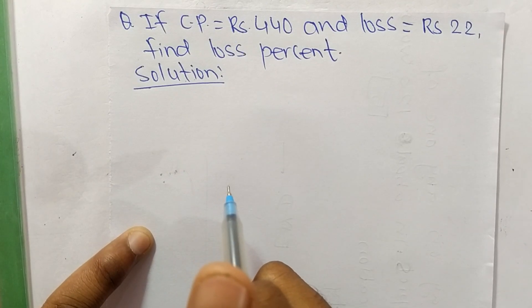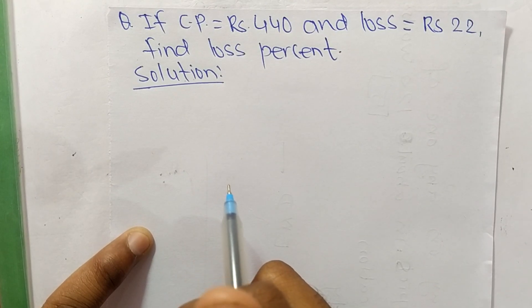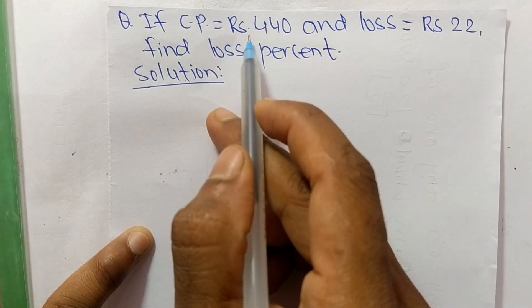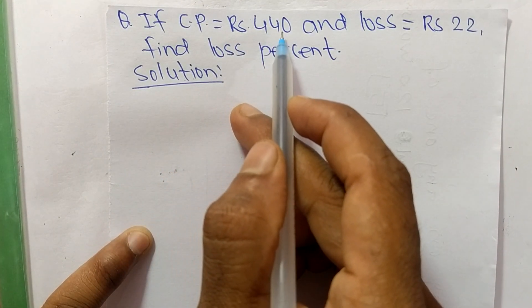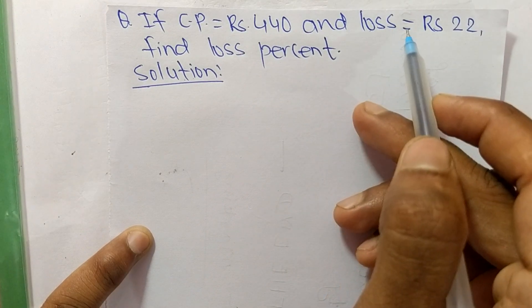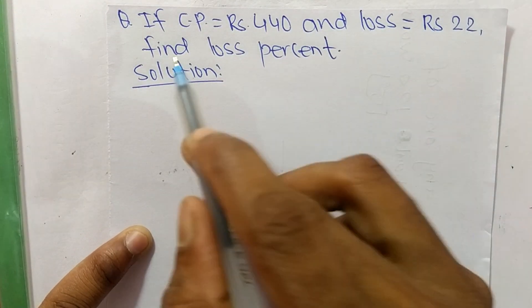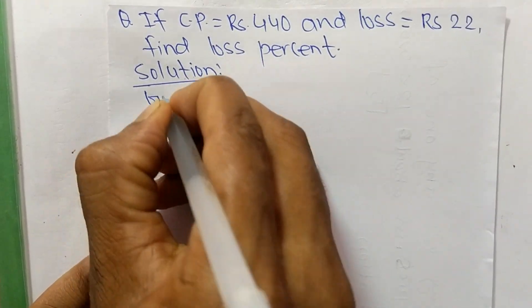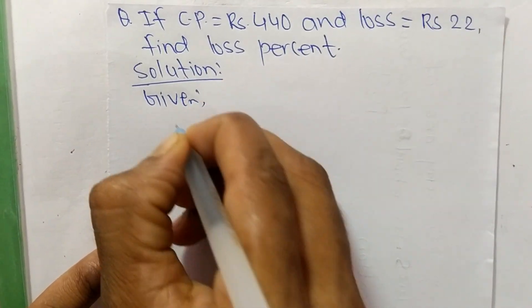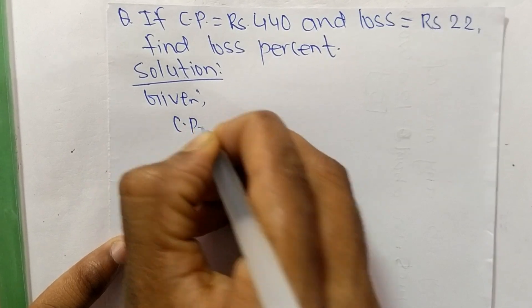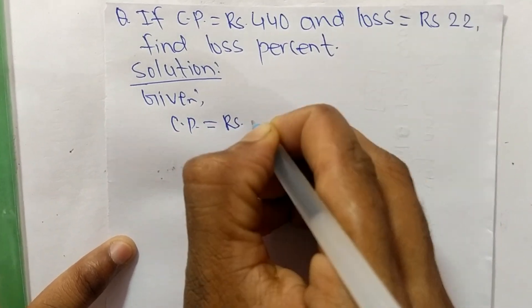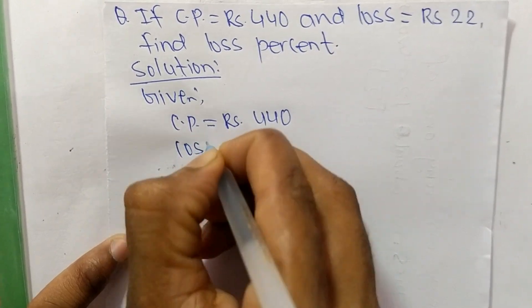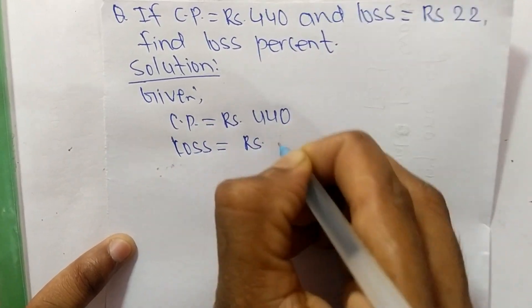Today in this video we are going to solve a profit and loss question. If CP equals Rs 440 and loss equals Rs 22, find loss percent. First of all we have to write what is given here. Given is CP equals Rs 440 and loss is given Rs 22.